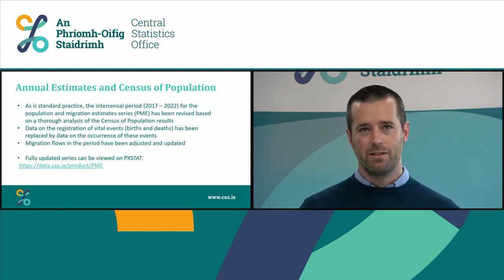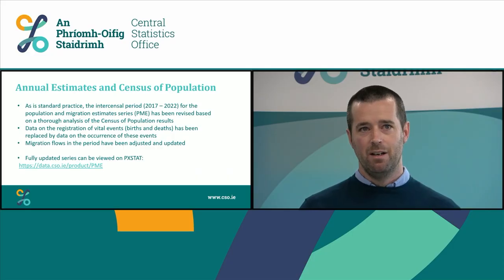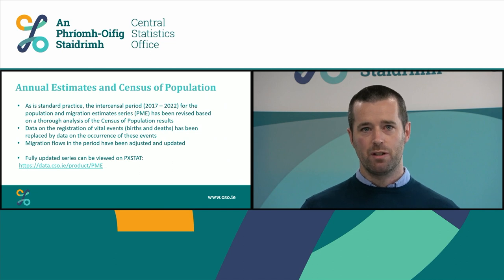As is standard practice when a census of population has been finalised, the intercensal period — which is 2017 to 2022 — for the population and migration estimates series gets revised. This revision has taken place and is based on a thorough analysis of the census of population results. Data on the registration of vital events, which are births and deaths, has been replaced by data on the occurrence of these events. Migration flows in the period have been adjusted and updated.